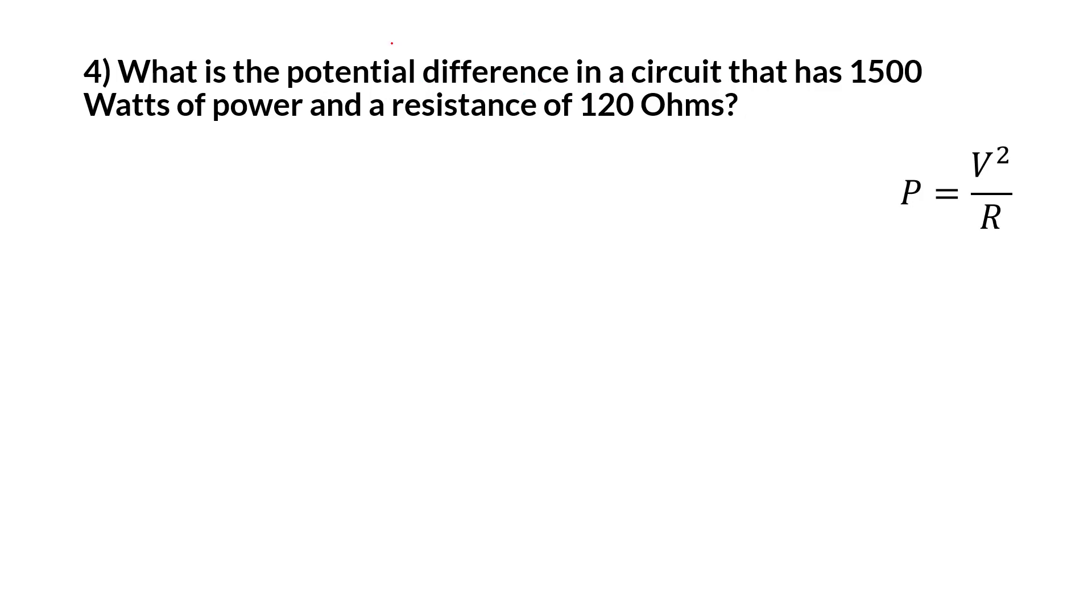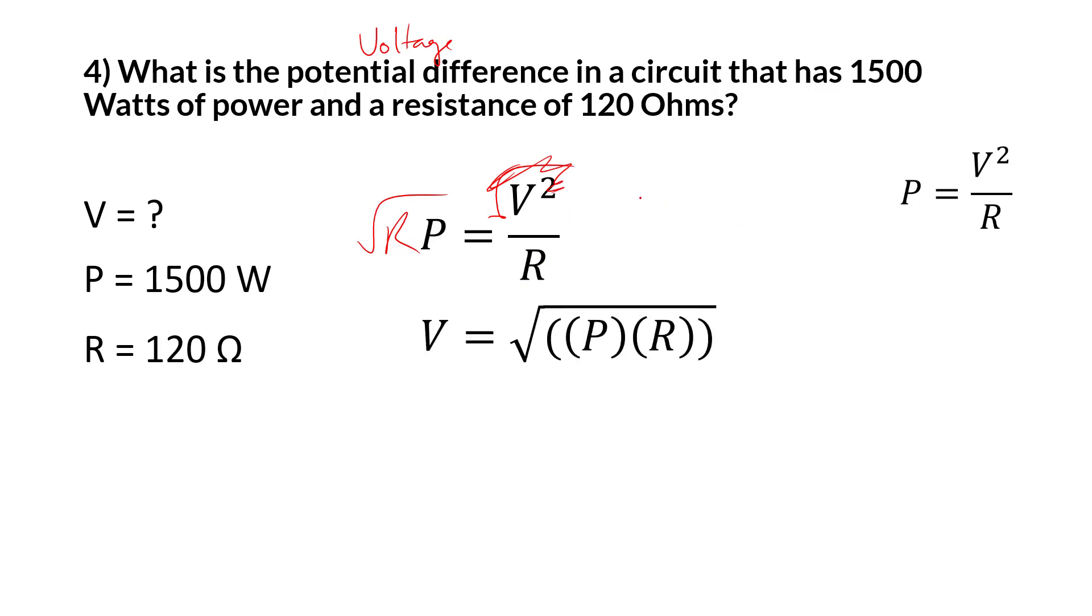What's the potential difference in a current? And just a reminder from previous lesson, potential difference is another way of saying voltage. So what's the voltage in a current that has 1,500 watts of power and 120 ohms of resistance? That's going to lead you to this equation. You have to rearrange it. V is on top, so that's fine. We can multiply out the R. When we multiply out the R, we still have to get rid of the squares. We're going to get rid of the squared. V equals square root of RP, and that's what you see right here, or PR, RP, same thing. Plug in the values, make sure you take the square root of the answer, and we get 424.26 volts.